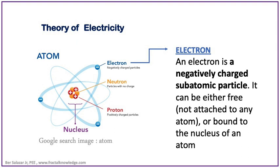An electron is a negatively charged subatomic particle. It can be either free, not attached to any atom, or bound to the nucleus of an atom. It is found in all atoms of matter and acting as a primary carrier of electricity in solids.